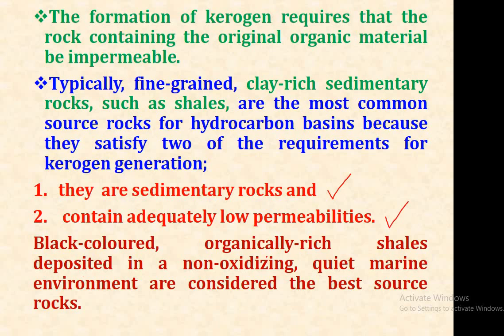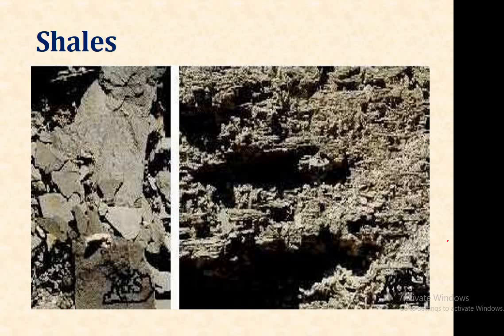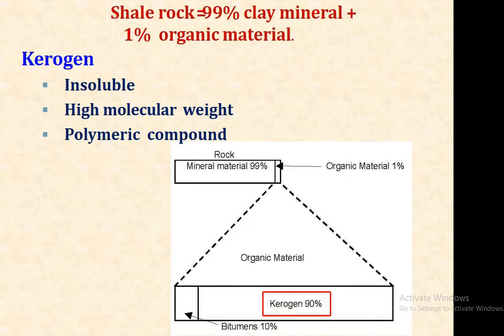Black-colored, organically rich shale deposited in non-oxidizing, quiet marine environments are considered the best source rock. This photograph shows shale, which is the best source rock for the generation of petroleum in sedimentary basins. Shale contains 99 percent clay minerals and one percent organic material, and kerogen is an insoluble, high molecular weight polymeric compound.